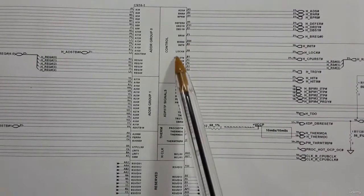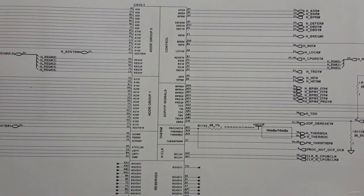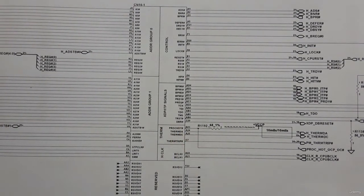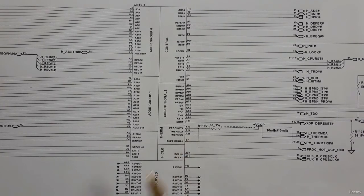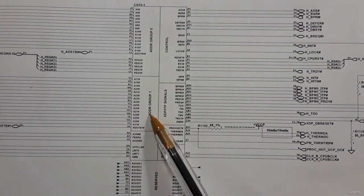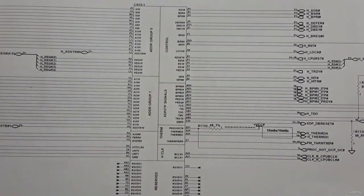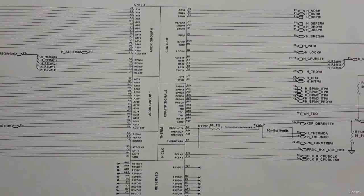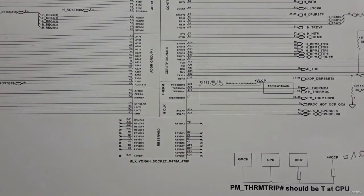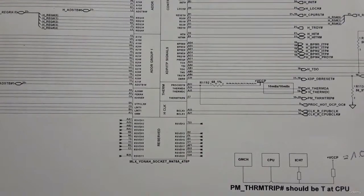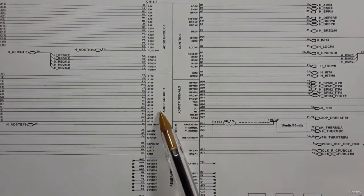This part is for the thermal signals — all about thermal signals. As you can see, we have thermal data and thermal clock. Here we have the address group: this is address group one, and here we have address group zero. This section is reserved.